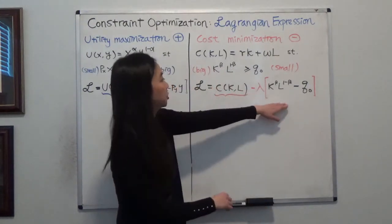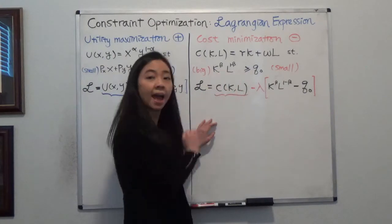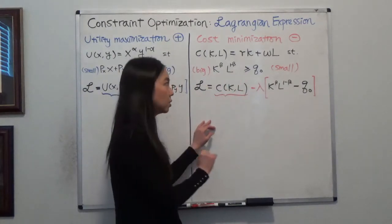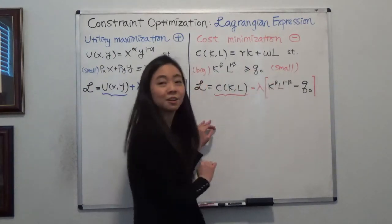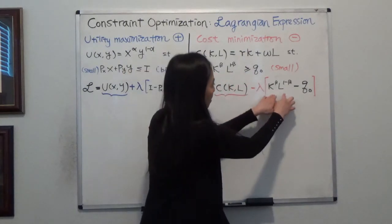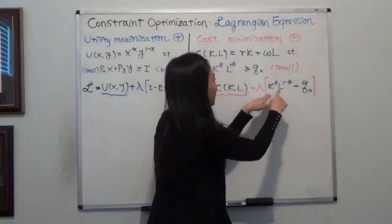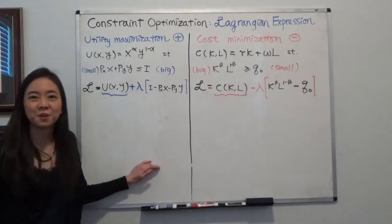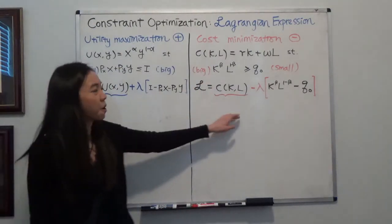So your constraint tells you that my output has to be greater than or equal to a certain quantity. So you know this output is bigger. You put output on the left-hand side. That's the difference between utility maximization and cost minimization.